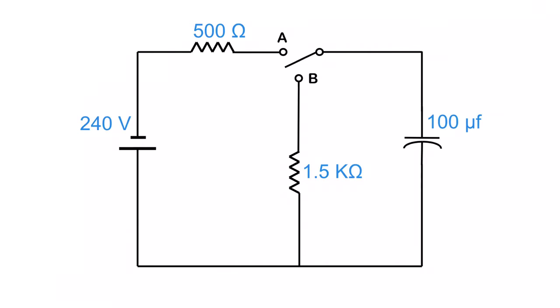First, to get the math behind us, let's assign some values. I'm going to give this current limiting resistor 500 ohms of resistance. This discharge resistor, I'm going to give 1.5 kilo ohms. The capacitor, we're going to give 100 microfarads, and we'll give this battery 240 volts.